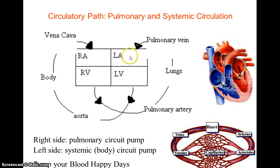Pulmonary veins dump blood into the left atrium, which then passes the next atrioventricular valve, known as the bicuspid.